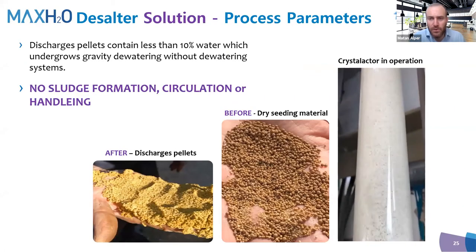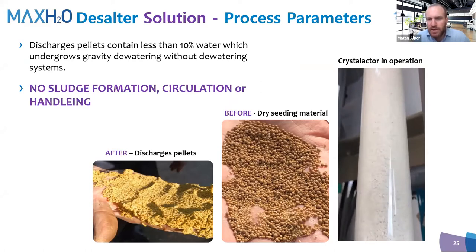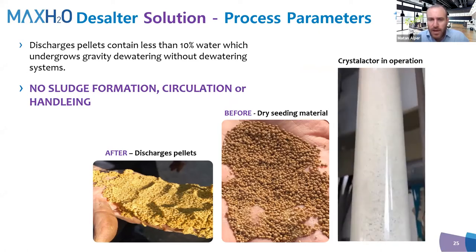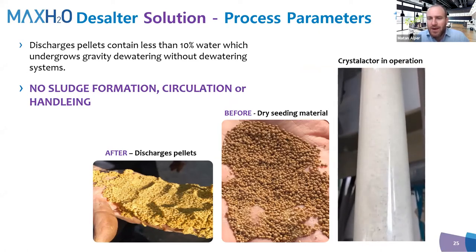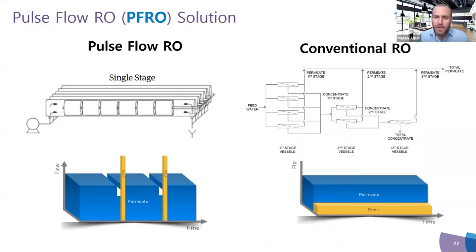In operation, the fluidized bed pellet reactor shows the large amount of surface area available for precipitation. The discharged pellets require no dewatering system and produce no sludge — essentially similar in consistency to wet sand.